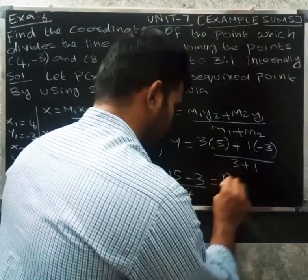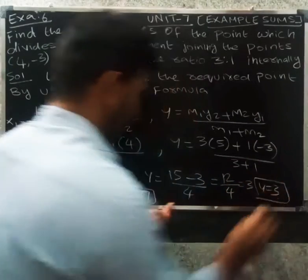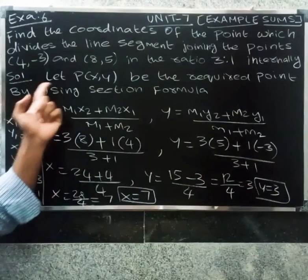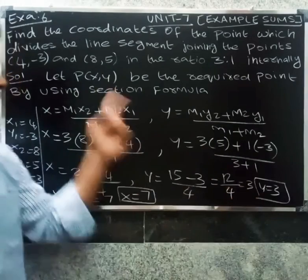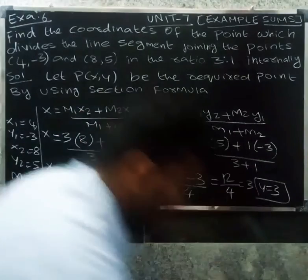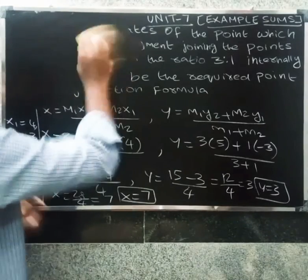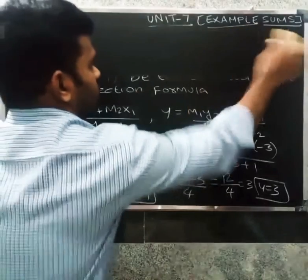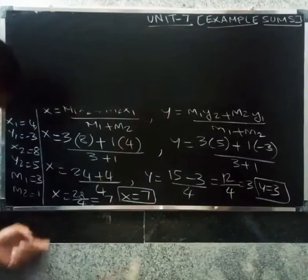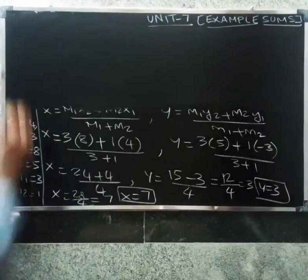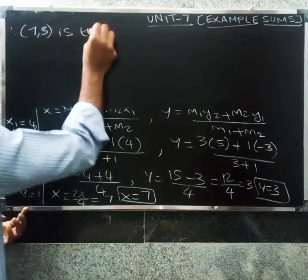And y = (15 - 3) / 4 = 12 / 4 = 3. So y equals 3. Therefore, (7, 3) is the required point.